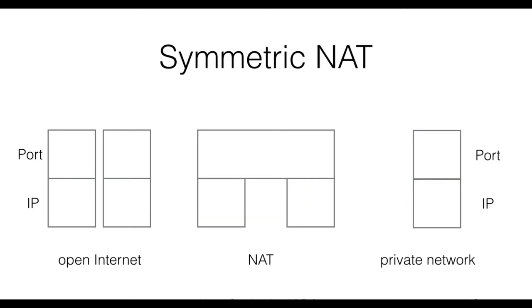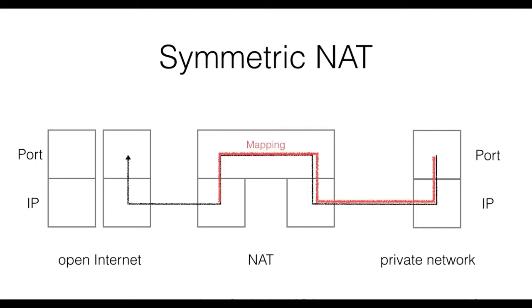If we want to specifically take into consideration which destination on the open Internet a host in the private network is talking to, this case is covered by a symmetric NAT. In a symmetric NAT, the main driver for creating a mapping in the translation table is a connection initiated by a host in the private network, and incoming traffic is allowed only if the initiator of the exchange was a host in the private network. However, the destination host and port will be instrumental in creating a mapping. For example, if a second connection is generated to a different IP and/or port, this will be stored in a different mapping. The major difference between port-restricted cone and symmetric NAT is therefore in the mapping creation.